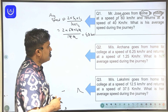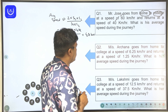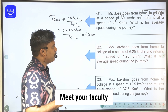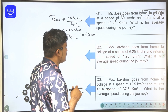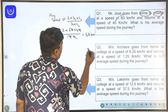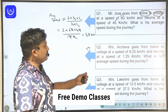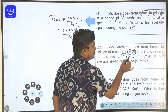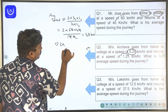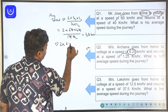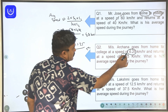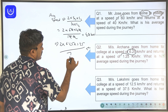In the next question, Ms. Arshana goes from home to college at a speed of 6.25 km per hour and returns at a speed of 1.25 km per hour. What is the average speed during the journey? We apply the same formula: 2 into S1 into S2 divided by S1 plus S2. S1 plus S2 is 6.25 plus 1.25, which is 7.50.